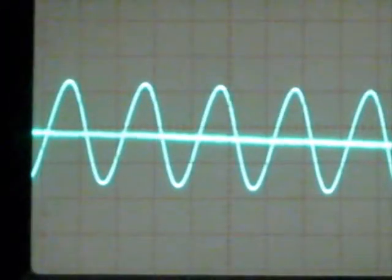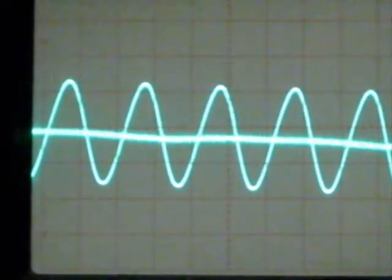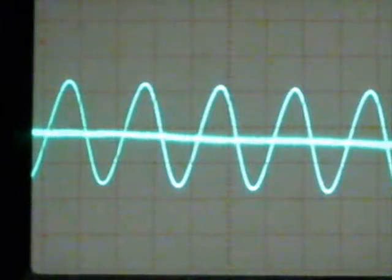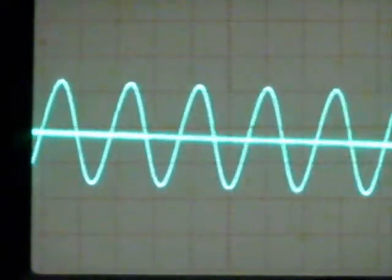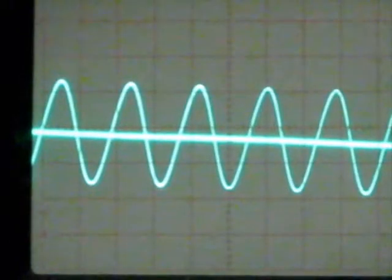That wave going across there, that's the sound that this function generator, this box, is making. So it's saying, I want you to sing this one particular note. And as I change the frequency, it changed the wave, just like I did yesterday with the beats.